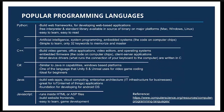C is used in artificial intelligence, system programming, and embedded systems — the code on computer chips. It's simple to learn as it only contains 32 keywords to memorize, and it's considered a lower-level language, which means it's more efficient to run. C++ is used for building video games, office applications, video editors, and operating systems. It can be used in embedded firmware such as the code on computer chips, and in client-side server applications.